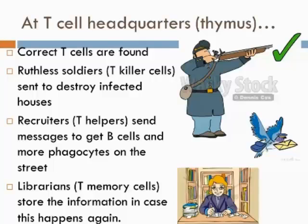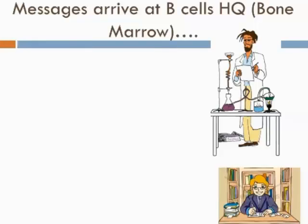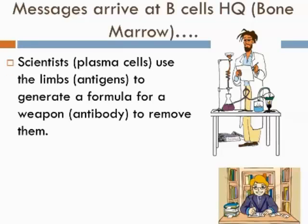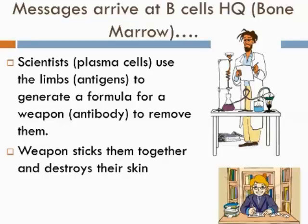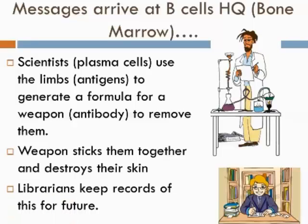These messages have now been sent flying across to the B cell headquarters in the bone marrow. The message arrives and they begin to be selected, to start differentiating. The scientists — the plasma cells — use samples of the limbs, the antigens, to come up with a formula for a weapon to fight off the pathogens. So they create antibodies using the antigens that have been presented by the other cells. This weapon can clump pathogens together so the cleanup trucks can do their job more easily, or it can actually destroy them by breaking down their skin. The B cell librarians, similar to the T cell librarians, record exactly what formula was used to generate the weapon, so if anything happens again they can go back to their records and produce the weapon much quicker next time.